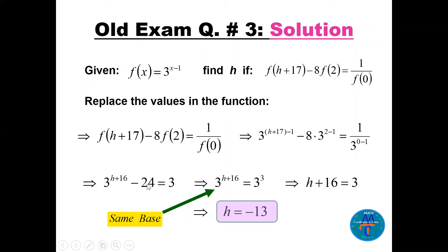So 3^(h+16) - 24 = 3. Moving -24 to the other side: 3^(h+16) = 27 = 3³. Since the bases are equal, h + 16 = 3, so h = -13. This is a nice, medium-difficulty question.